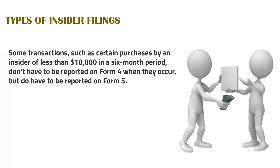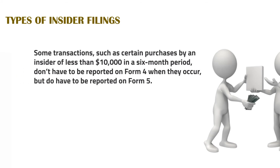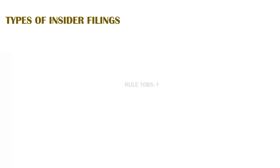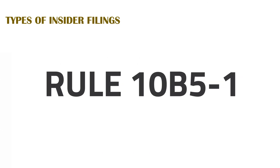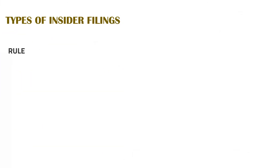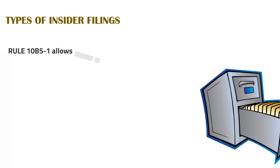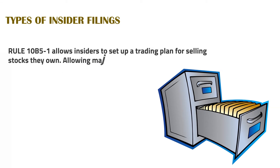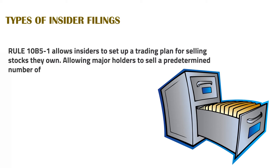Other than Forms 3, 4, and 5, you should be aware of Rule 10b5-1. Rule 10b5-1 allows insiders to set up a trading plan for selling stocks they own, allowing major holders to sell a predetermined number of shares at a predetermined time.